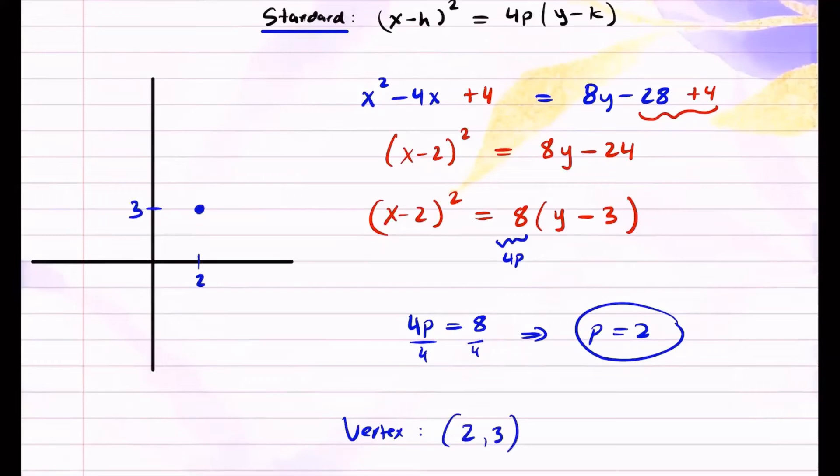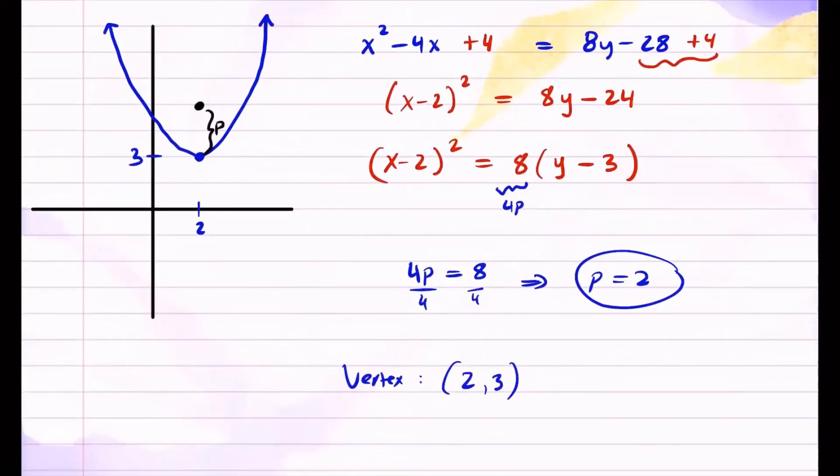And like we said, the parabola opens upward. So it's going to look something like this. That's the parabola. So you know the focus is the point inside the parabola, and that's p distance away from the vertex. So if my vertex is 2, 3, so the focus is going to be 2 comma 3 plus 2, which is 5. So this is 2 comma 5. So that's the point for the focus. This is 2 comma 5.